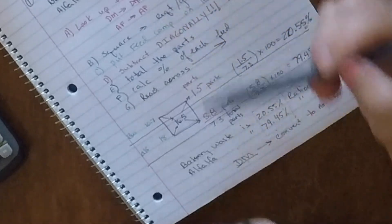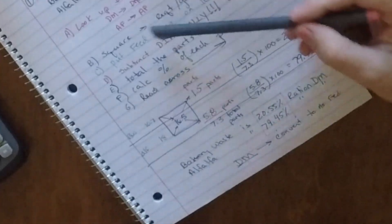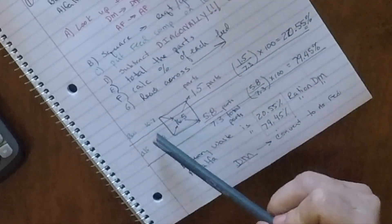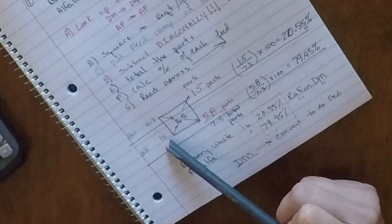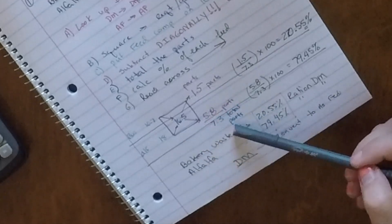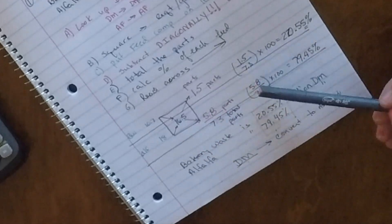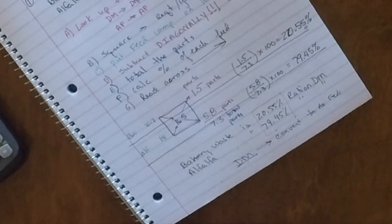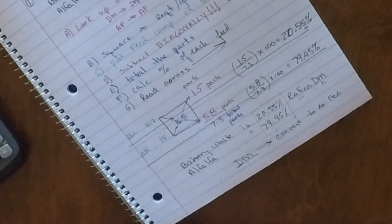So we're first going to look up the data. We're going to draw a square and put the requirement in the center. We're going to put the feed composition, so the percent of the nutrients on the left corners. Subtract diagonally, total the parts, calculate the percentage of each feed, and read it across to get our final solution. So go ahead and take a minute and do the other Pearson square problems and then come back and start the algebra. Give it a try and see what you can come up with.